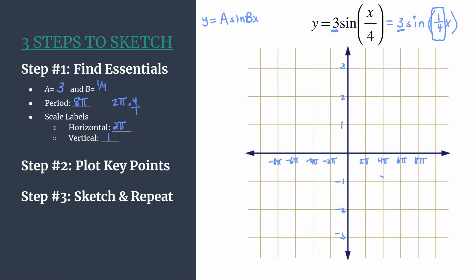We're ready for step 2: plot our key points. The base pattern for an unreflected sine — since a is positive 3 — is: zero, maximum, zero, minimum. We start at the origin for our first zero. Our maximum falls at the first tick mark, 2π, with a y-coordinate of a, giving us the point (2π, 3). The next zero is at the second tick mark, 4π. Our minimum is at the third tick mark, 6π, with y-coordinate negative a, giving us (6π, −3).